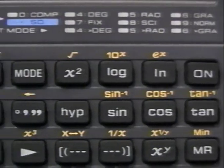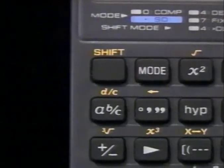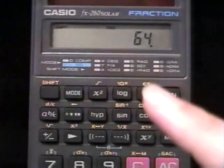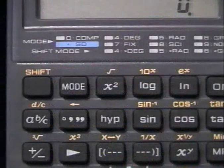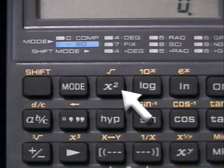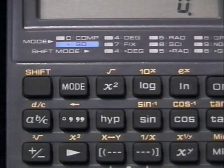The second functions are notated in orange or gold above each key on the calculator. Unlike a keyboard, however, the shift key and the function must not be pressed at the same time. Notice that the square root symbol is in orange or gold directly above the x squared key on the third from the left key in the top row. The square root function is the second function for this key.